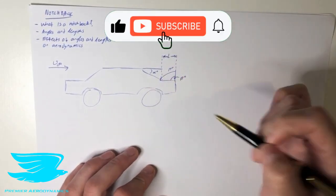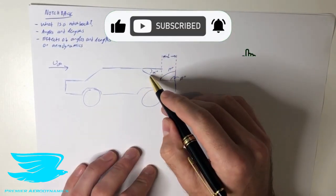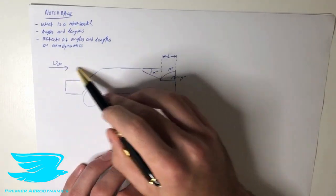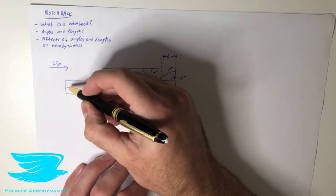So as I mentioned, we have a bunch of different angles here. First of all, we have the back window here, and we have the free stream velocity, u infinity. We have a typical car moving forwards.